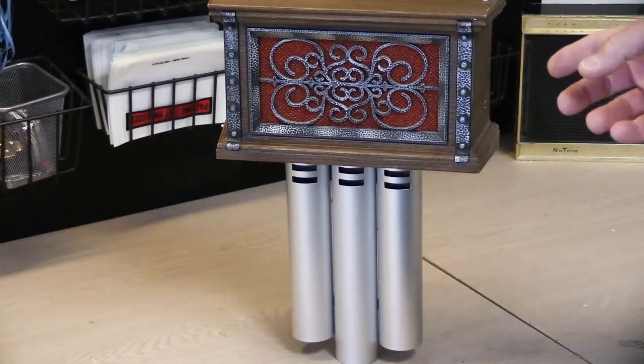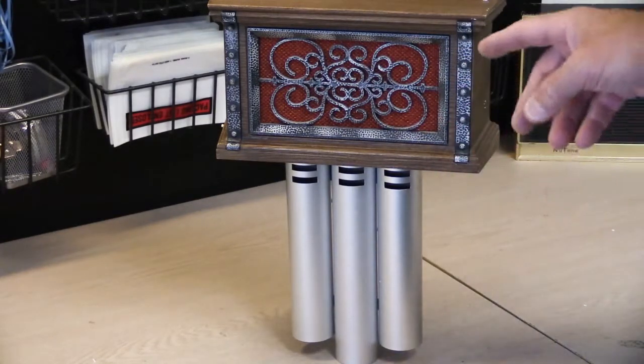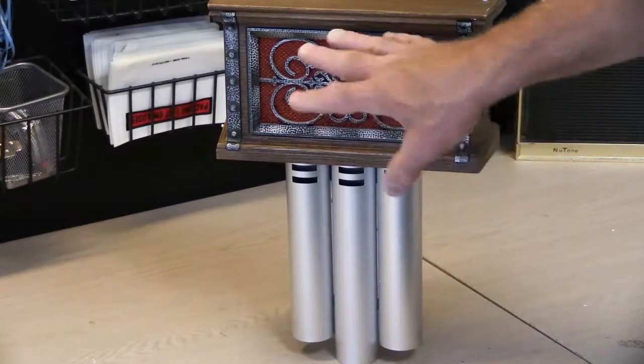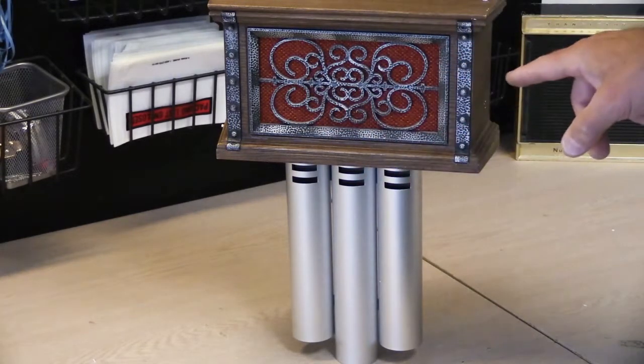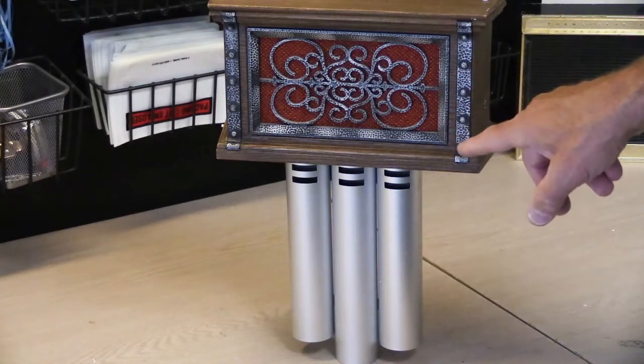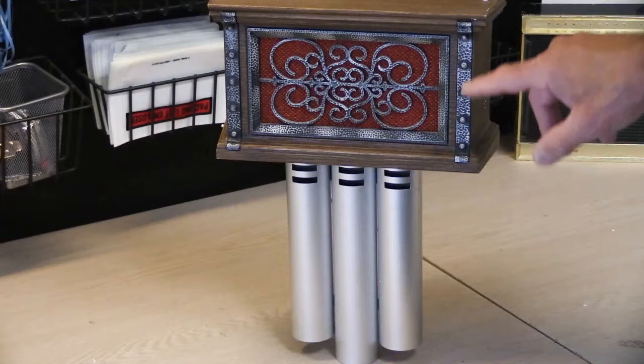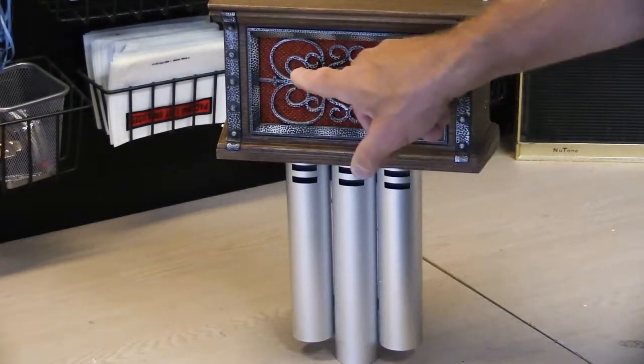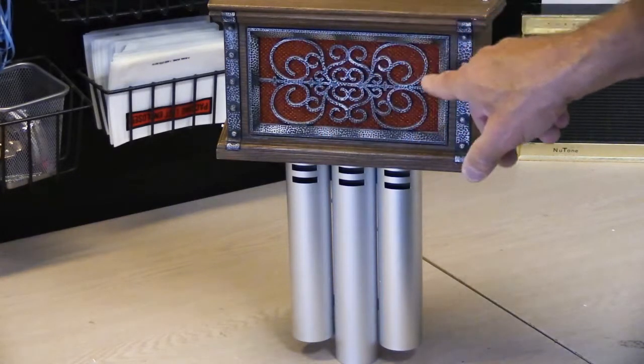So what we have here is an LC38. It's an 8-note short tube bar chime and it's got this plastic cover with this sort of Spanish-y look to it. We've got this antique hammered strapping on here. This is all plastic with this filigree insert and it's got this orange-y cloth, woven cloth cover behind the grill.